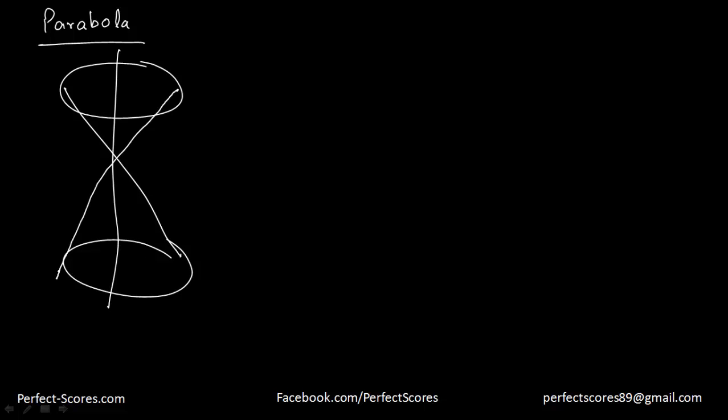So in the previous video, we talked about circles, conic sections and everything. We discussed that a parabola is created if you cut the conic section at an angle which is actually equal to the angle made by the vertical axis. So if this is the conic section and this is angle alpha, and if you cut the conic section at angle alpha, then you're going to get a parabola.